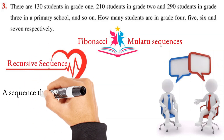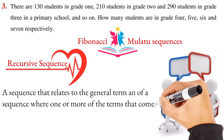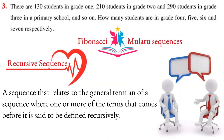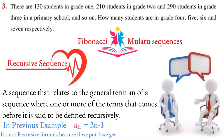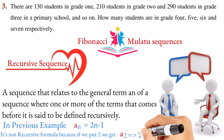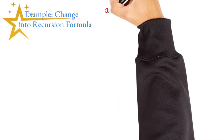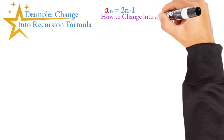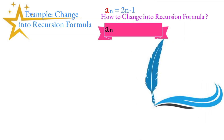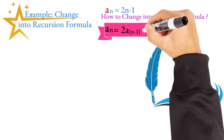We have to make the recursion formula, or recursive sequence. If you want to find a term, you find it using the previous term. For example, an equals 2n minus 1 can be expressed recursively. The recursion formula is an equals 2 times a(n-1) minus 1.